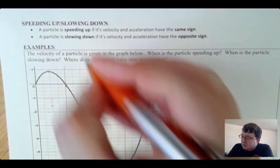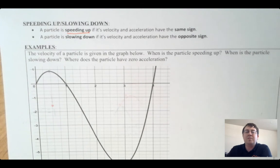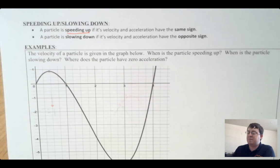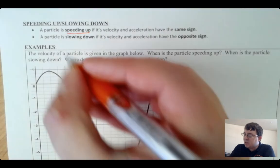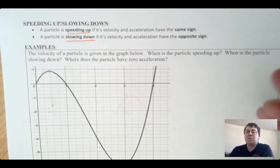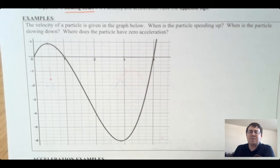Let's talk about speeding up and slowing down. A particle is speeding up if its velocity and acceleration have the same sign — both positive or both negative, meaning acceleration is pushing the velocity further in the same direction. A particle is slowing down if its velocity and acceleration have opposite signs — one positive, one negative.